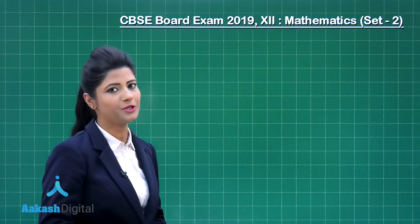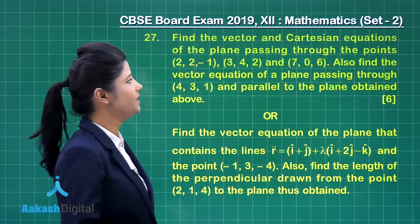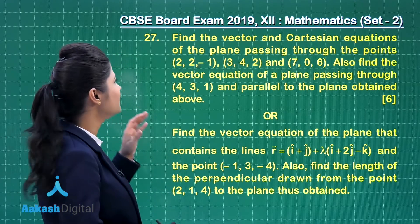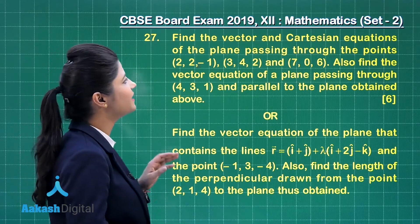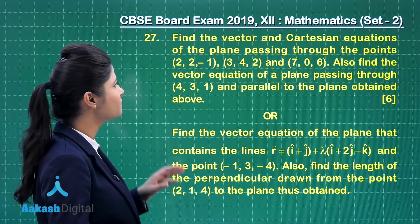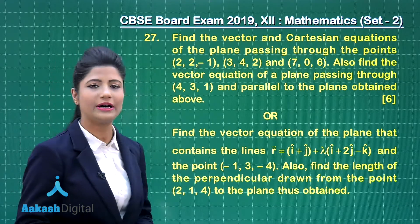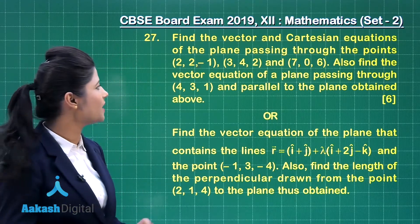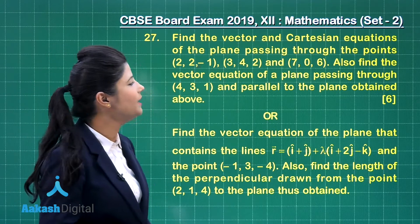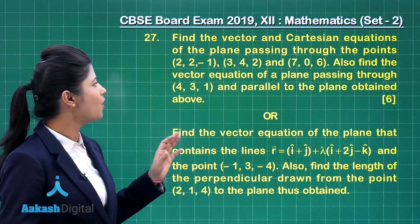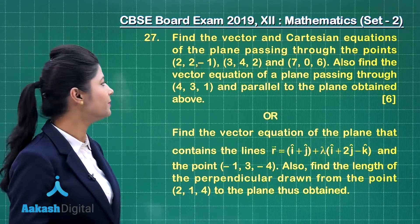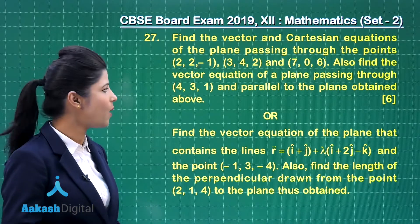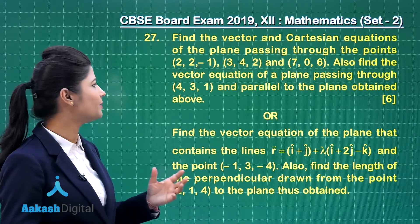Let us take up question number 27. This is a very interesting question having two choices. In the first choice, it has been stated: find the vector and Cartesian equations of the plane passing through the points having coordinates (2, 2, -1), (3, 4, 2), (7, 0, 6). Also, find the vector equation of the plane passing through the point having coordinates (4, 3, 1) and parallel to the plane obtained above.